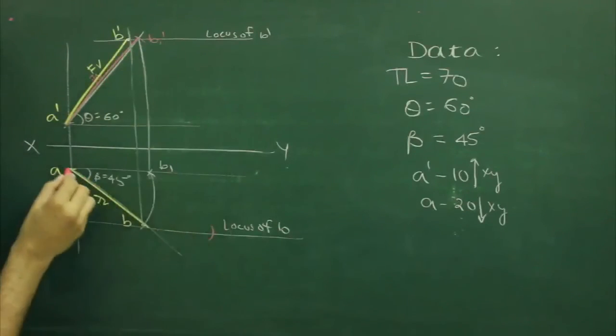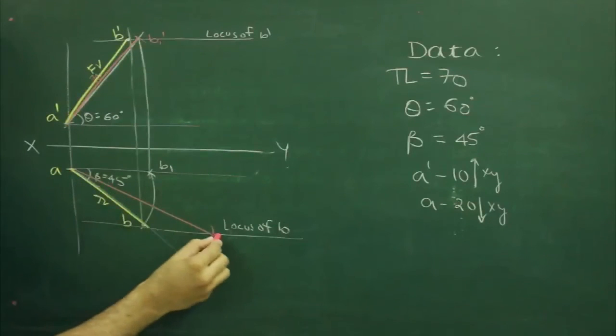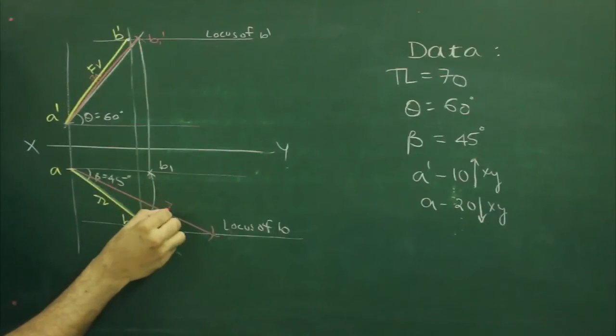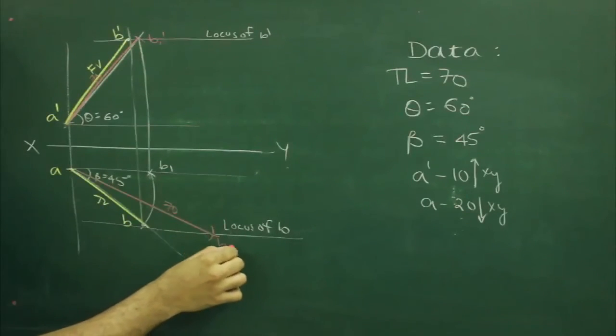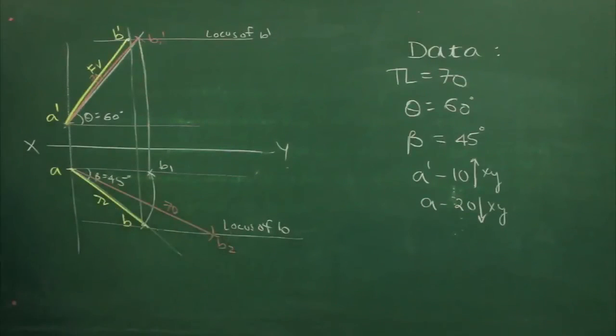We can mark the true length directly at a as 70. So we got b2.